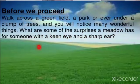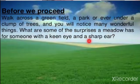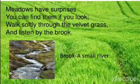Now we'll start the explanation of the poem line by line. In this poem, the poet tells us that we can discover each and everything if we have a keen eye and sharp ear. If you observe with a keen eye and a sharp ear, we can discover lots of surprises which the meadow has. Let's look at the first stanza of this poem.